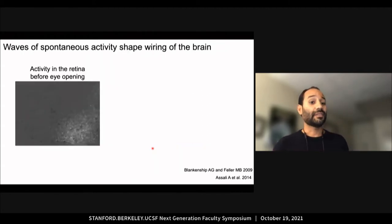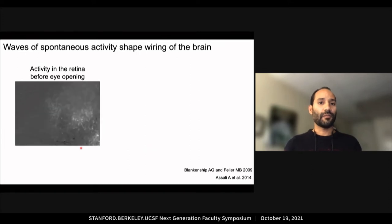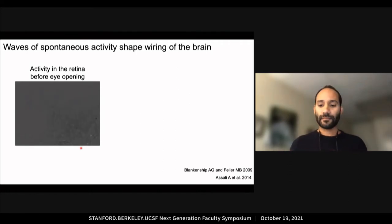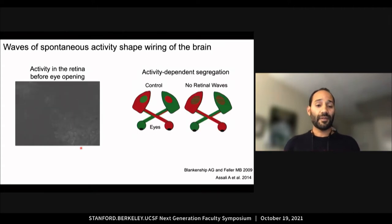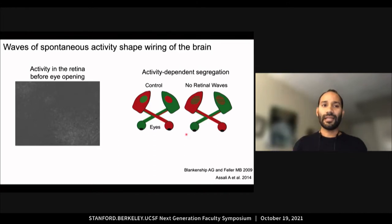We do know that spontaneous activity experienced by developing brains is necessary for wiring of the nervous system. This is a movie of retinal waves, which are surges of neural activity that spread across networks in the retina before the eyes even open. Retinal waves shape visual pathways. Normally, neurons from the left and right eye segregate in our brains. This is an example of how early activity shapes wiring of the nervous system.